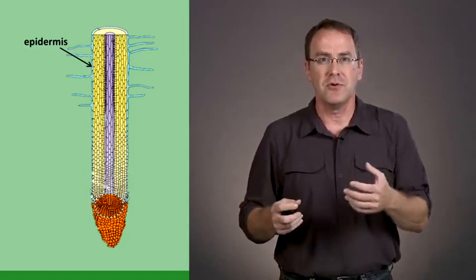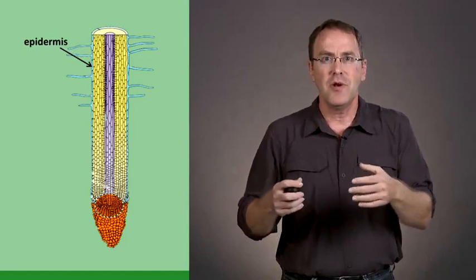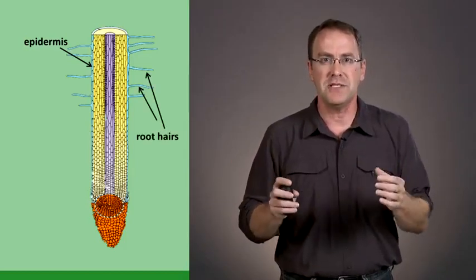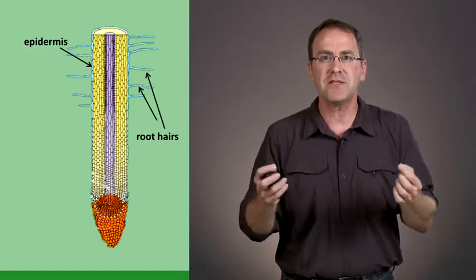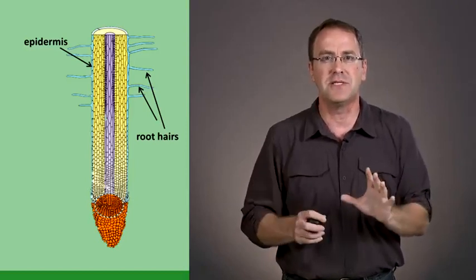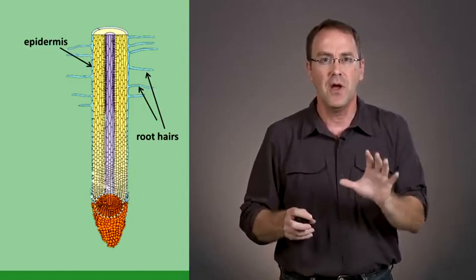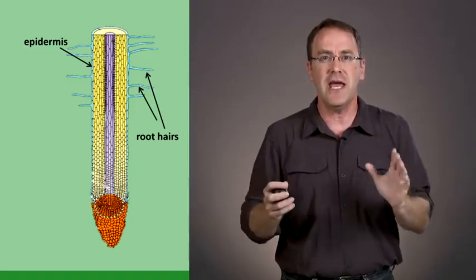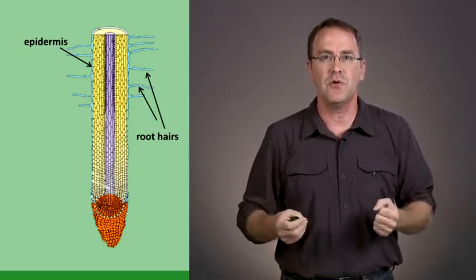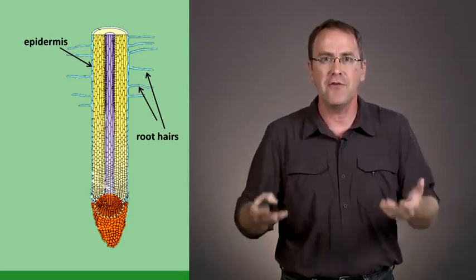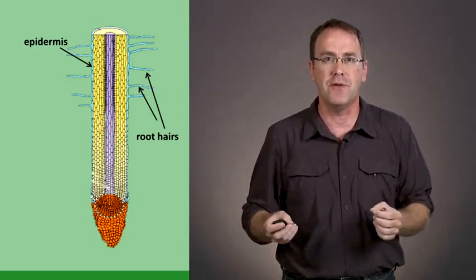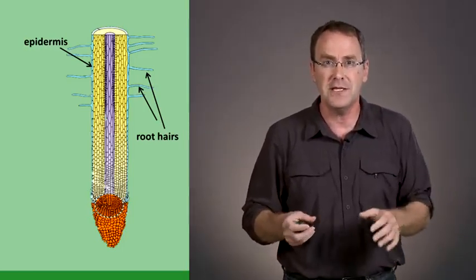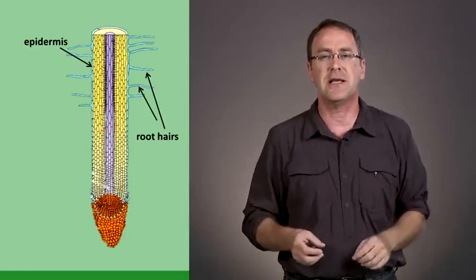The absorption of water and minerals is facilitated through an increase in the area of the root, of the epidermis, by these projections that come out of some of the epidermis cells, which are called root hairs. Not every cell has a root hair, but some do. These increase the area of contact between the root and the soil, allowing for efficient absorption. You sometimes see these root hairs if you're pulling out weeds.